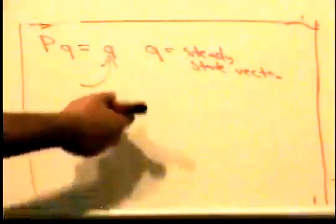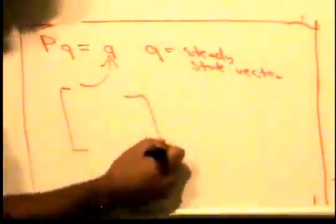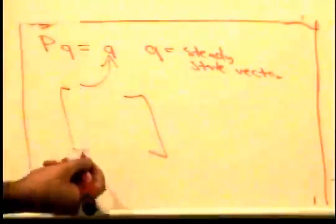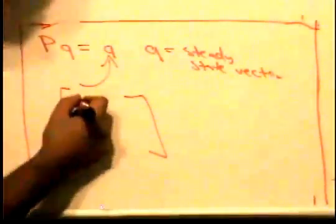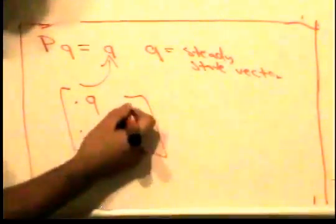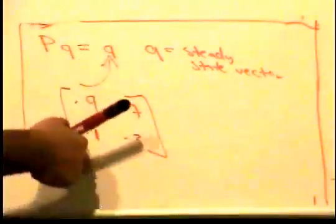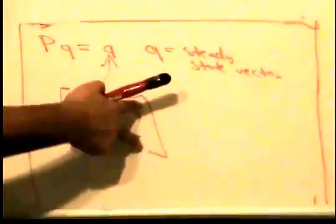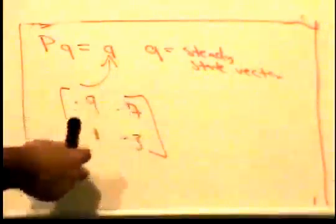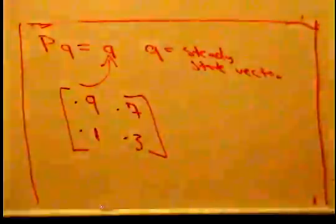Every stochastic matrix has a steady state vector. Stochastic means that the entries add up to one—it's a probability. For example, if we have 0.9 and 0.1, then 0.7 and 0.3, these two add up to one and these two add up to one, making it a stochastic matrix. The entries can't be negative.